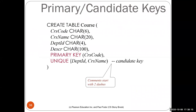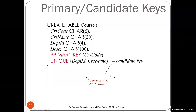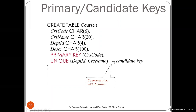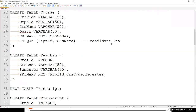In SQL DDL, a primary key can be declared by listing all attributes in that primary key. A secondary candidate key can be represented with the UNIQUE keyword followed by the key attributes in parentheses. Double dashes (--) are used for comments in SQL — if you want to leave yourself some notes within a query.